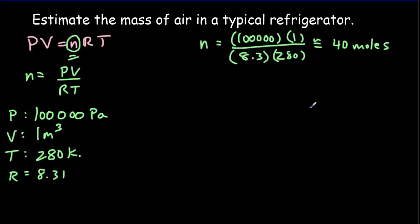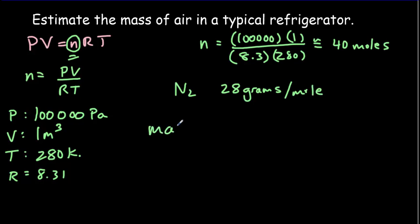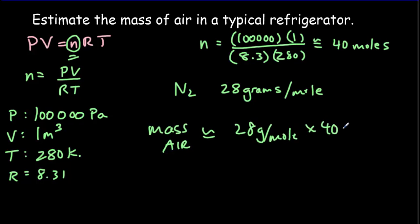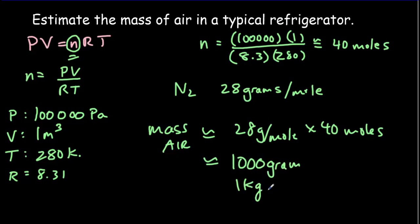Inside the refrigerator we've got air, which is 80% nitrogen. Nitrogen has a molar mass of 28 grams per mole. So the mass of the air is roughly 28 grams per mole times 40 moles, giving about 1,000 grams or one kilogram. The air in your refrigerator would actually weigh more than, say, a grapefruit in your refrigerator.